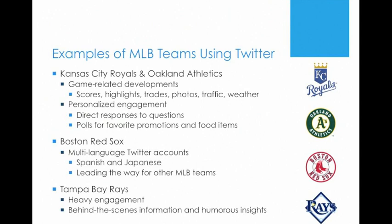Looking at specific MLB teams, the Kansas City Royals and the Oakland Athletics show examples of how most teams use Twitter, mainly for game-related developments — scores, highlights, trades, photos, videos, traffic, weather. They also have personalized engagement: direct responses to fan questions like gate and parking lot times, and polls where fans can vote on favorite promotions, food items, and giveaways. Involving fans and letting them voice their opinion generates a lot more response and activity on Twitter.